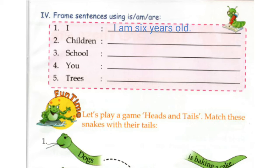Full stop. Children, don't forget to put a full stop after the sentence ends. Number two: Children. Children means more than one child, so it is a plural noun. We can write: Children are playing.